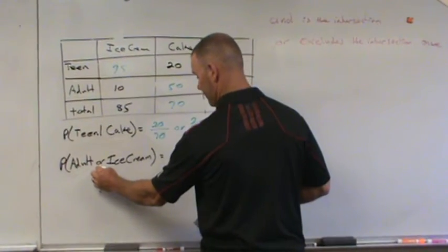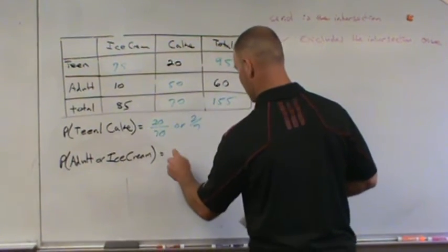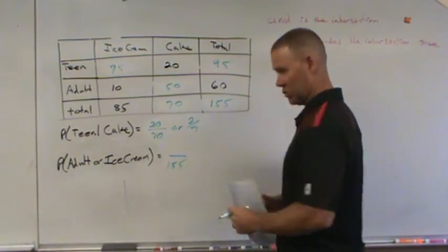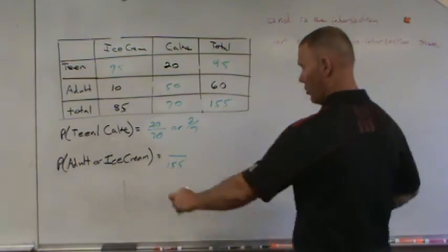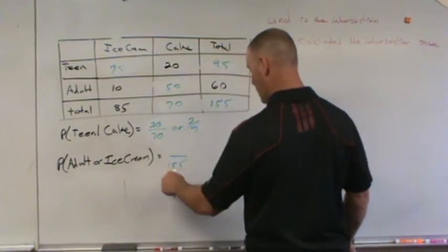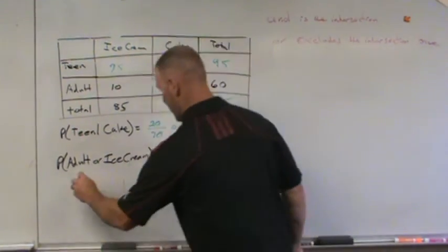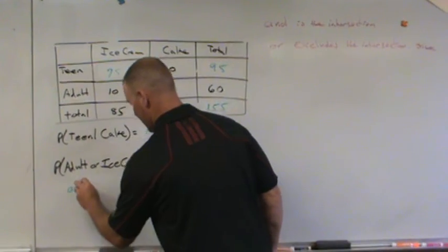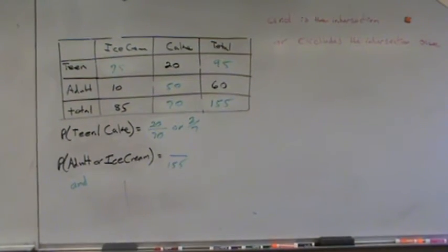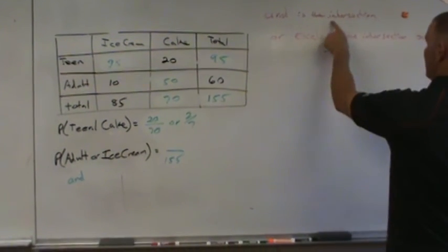In and or or probabilities, your denominator is always the total number of people that you are serving. So if it's adult or ice cream, the and or or is always total population. And is always the intersection. And I think you can see it up on the board there. And is always the intersection.